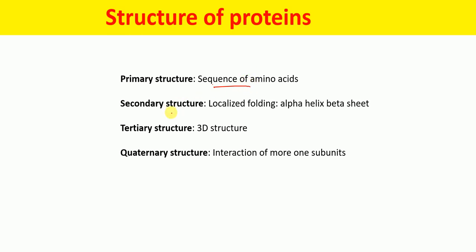The secondary structure of the protein results from localized folding. Alpha helix and beta sheet are the most common secondary structures of the protein. The tertiary structure is the three-dimensional structure of the protein. The quaternary structure involves interaction of more than one subunit.